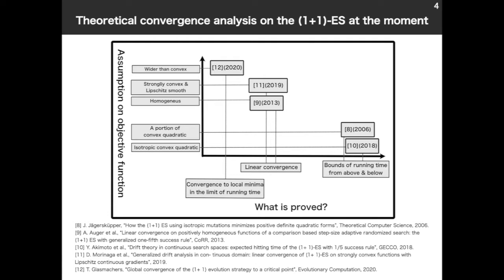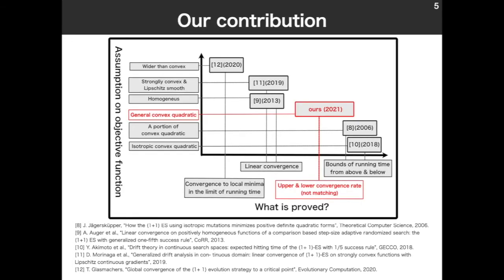And they show linear convergence. Linear convergence means, roughly speaking, the progress is at least constant. And in 2020, [12] assumes a class of the objective function wider than convex function and shows convergence to local minima in the limit of running time. Then, our position is here. We consider the optimization of the (1+1)-ES on a general convex quadratic function and show upper convergence rate and lower convergence rate. I'm afraid to say that it does not match.